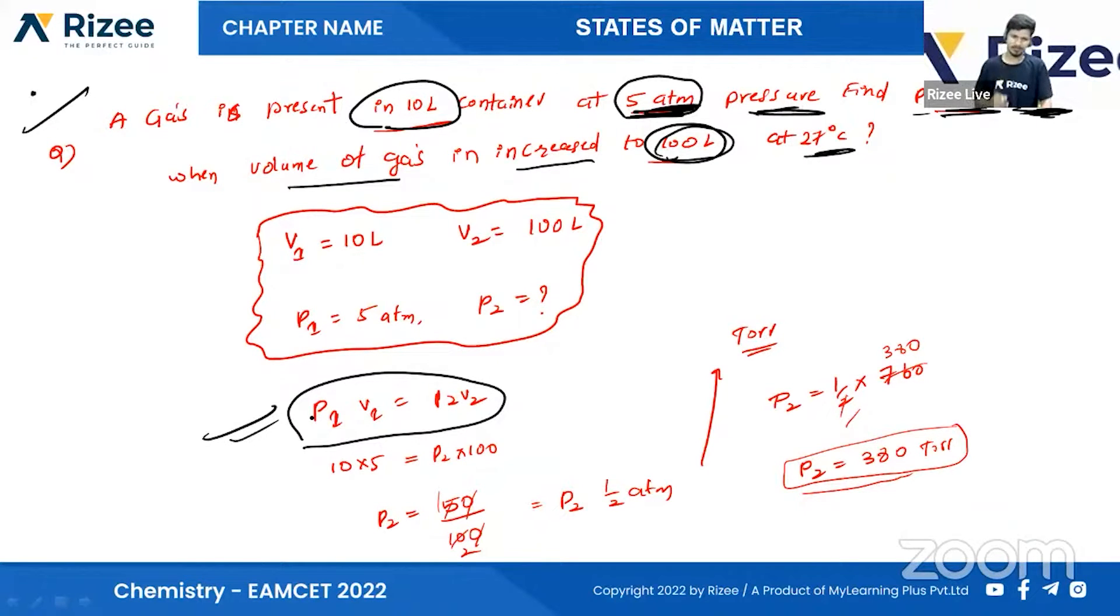We have to find pressure 1. Pressure 1 here is 5 ATM. This question is very important.